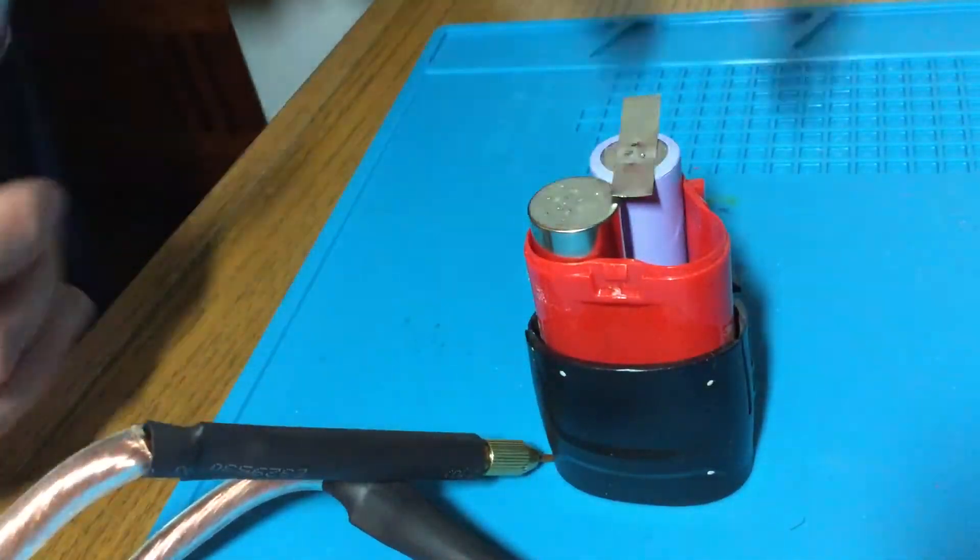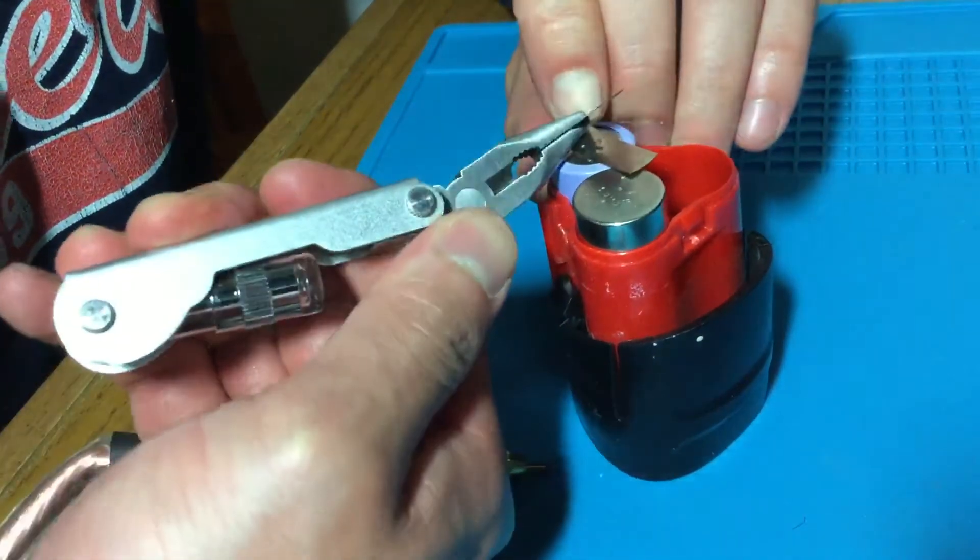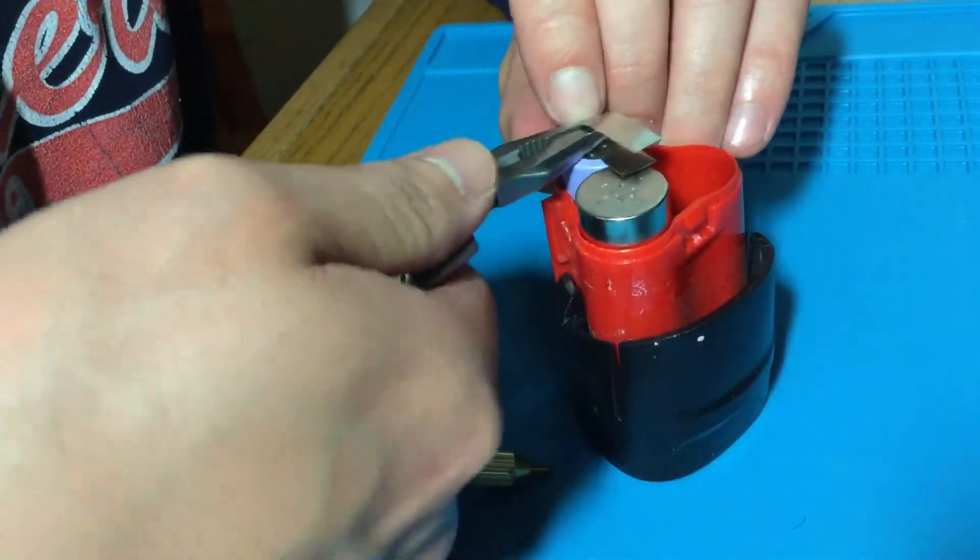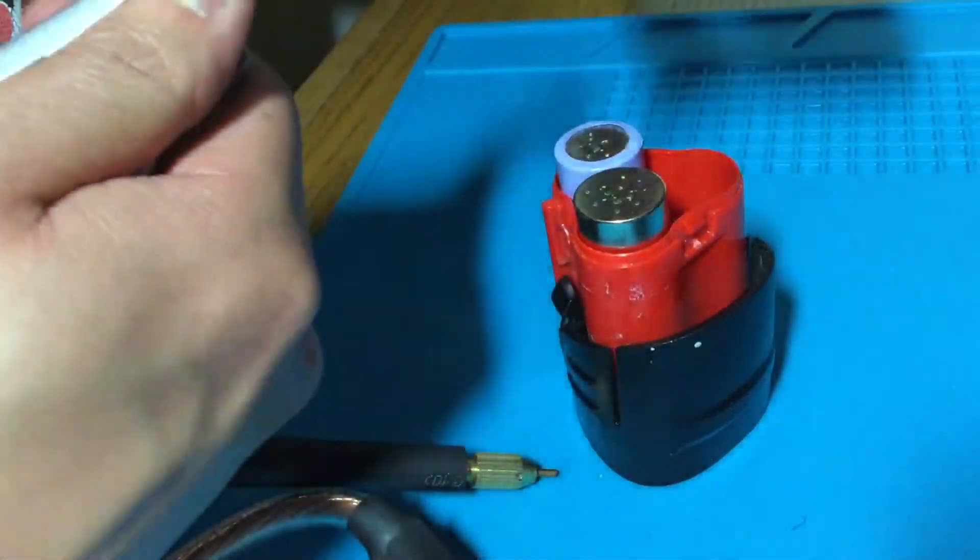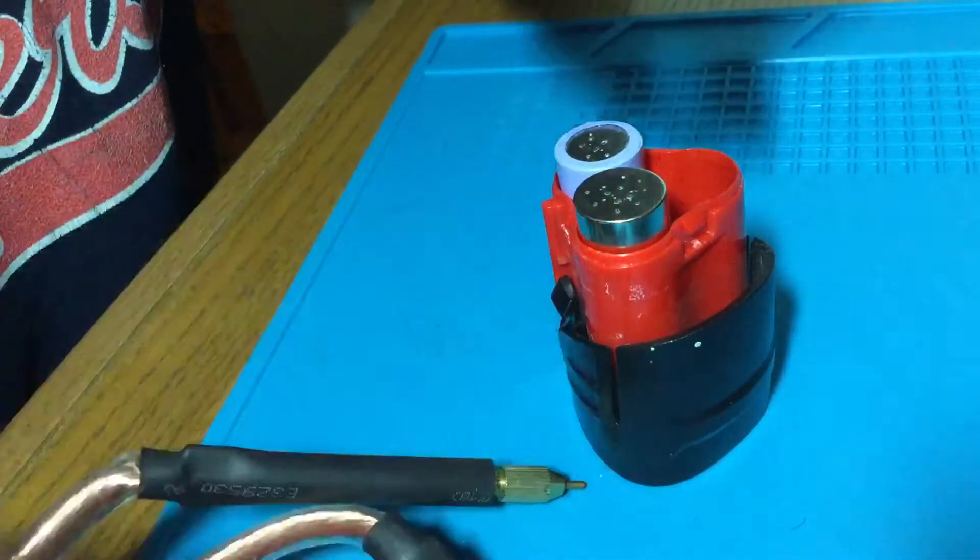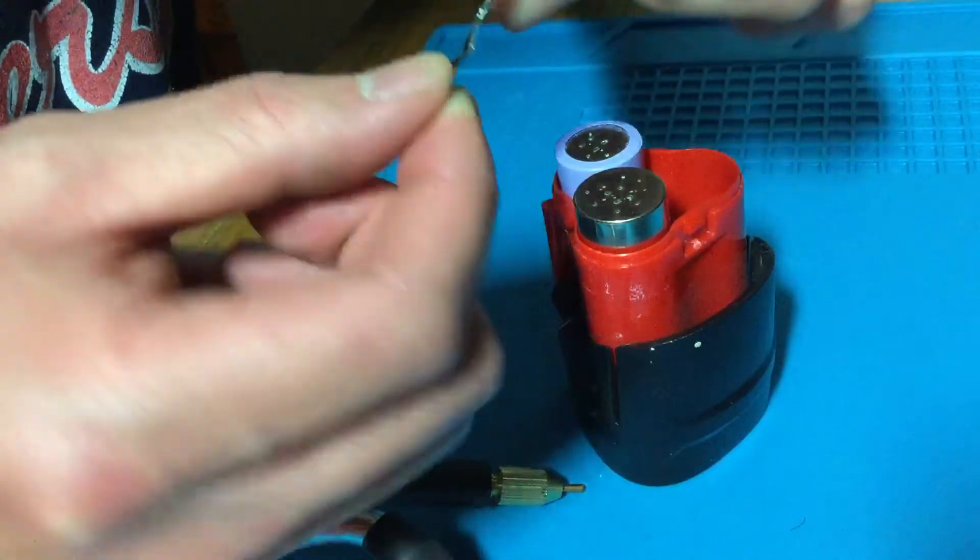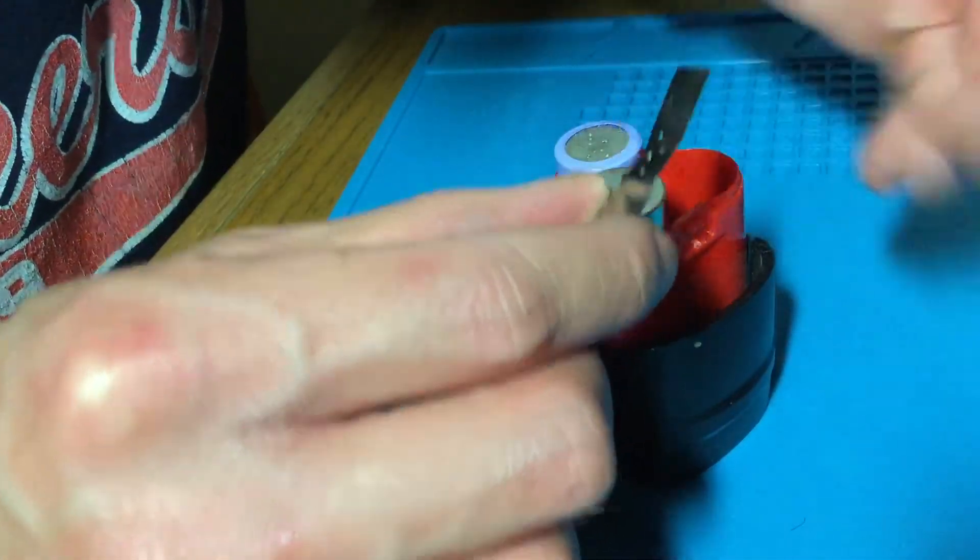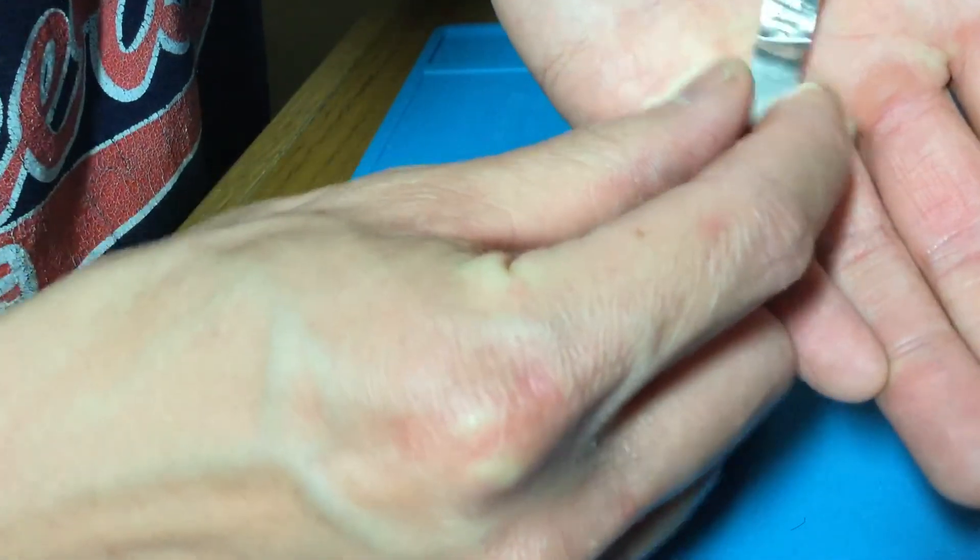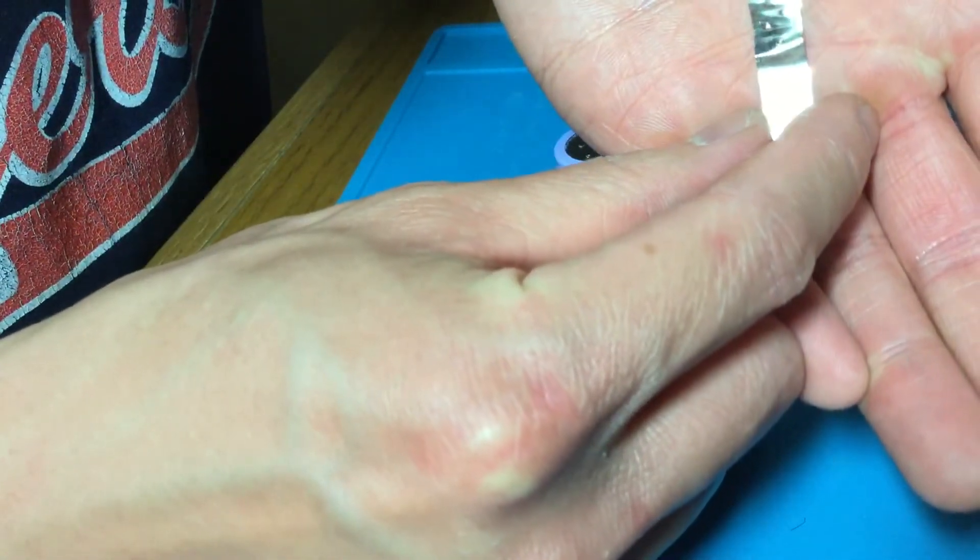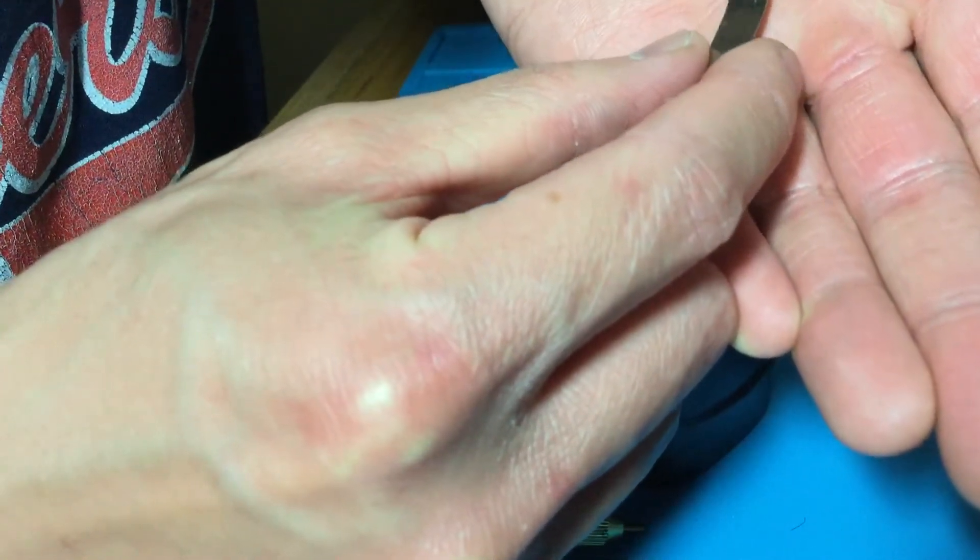So, that's four. You can see the tiniest of holes on the bottom-most spot welds. But then the other three just kind of broke off very, very easily.